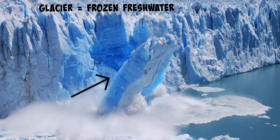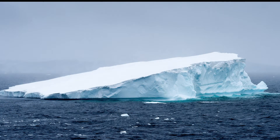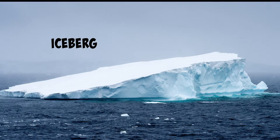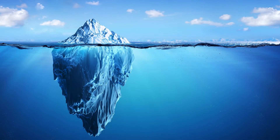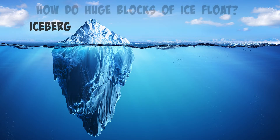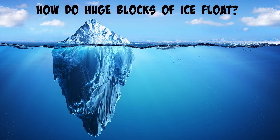Sometimes pieces of these glaciers will break off into the ocean like you see here. Once they fall in the ocean, they will float, and we call that an iceberg. When you look at an iceberg, you see only the tip of it. In fact, a large amount of an iceberg is underwater, with only part of it sticking out from the surface.